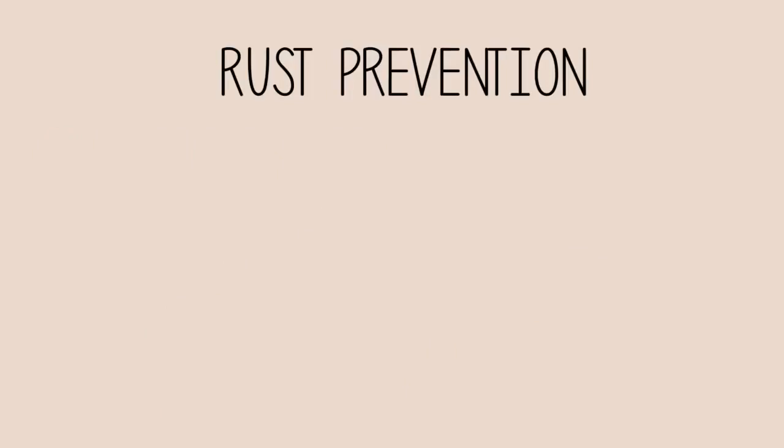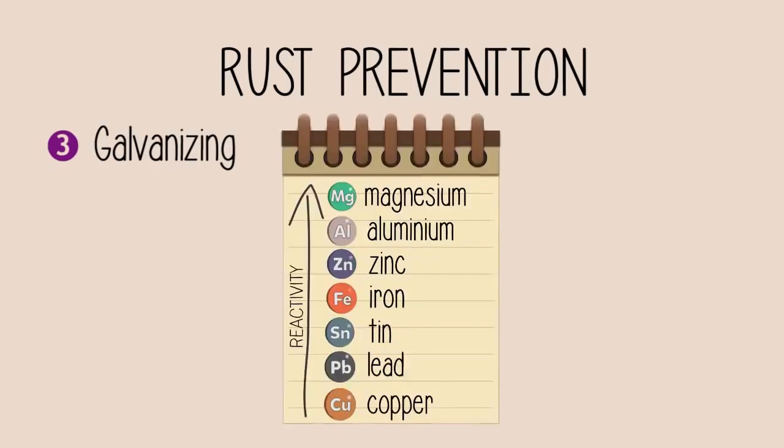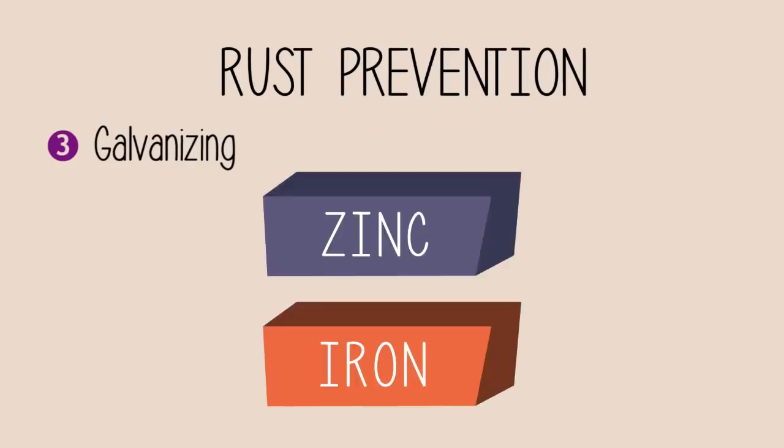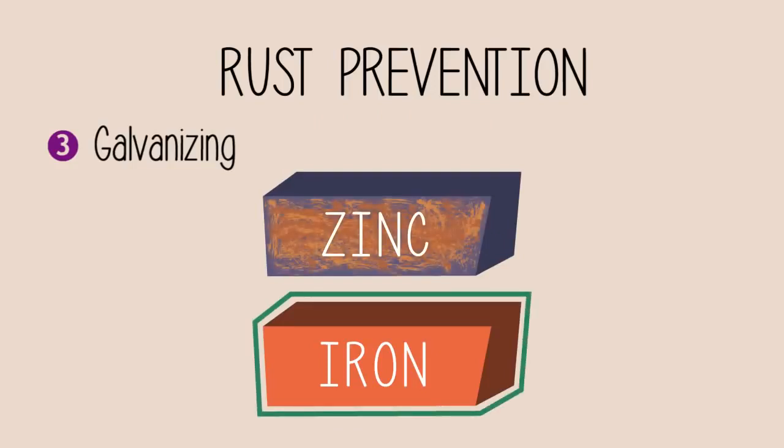Another way to prevent rusting is a sacrificial protection method called galvanizing. Have a look at this reactivity table. Zinc is more reactive than iron. When exposed to oxygen and moisture, zinc will corrode faster than iron. So if we put them together, zinc protects iron but is sacrificing itself, hence the term sacrificial protection.